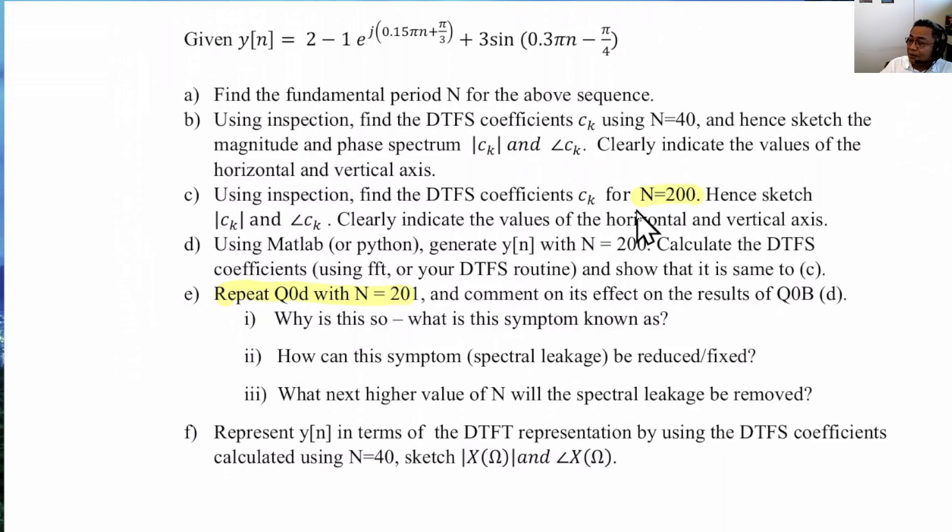You would have realized that when we use n equals to 200, the answers for these spectral lines representing these three terms all land exactly at Ck. And there is no such thing as something called spectral leakage.